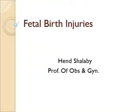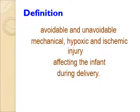Good morning, everybody. We will discuss today the fatal birth injury. Fatal birth injury could be avoidable or unavoidable — mechanical, hypoxic, and ischemic injury of the infant after delivery. If you have a baby with a problem or injury related to birth, you may blame the doctor, because this could be an avoidable problem. Or it could occur even though the doctor did his best to avoid it, because it is an unavoidable complication. So it is important to distinguish which part can be avoided and which part cannot.